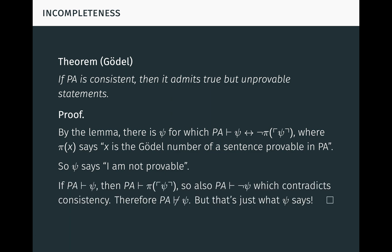Now, if Peano arithmetic proves psi, then it proves that psi is provable. So by definition of psi, it also proves not psi, which contradicts the assumption of consistency. Therefore, psi is not provable. But that's just what psi says, so it's also true.